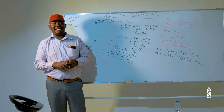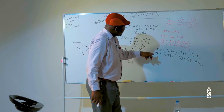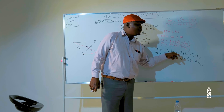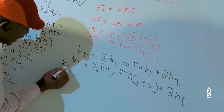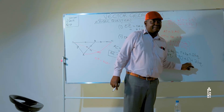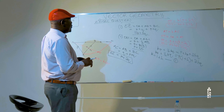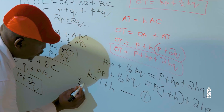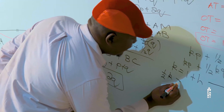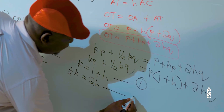Equating the scalar coefficients, for P: K equals 1 plus H — this is equation 1. For Q: half K equals 2H — this is equation 2. We have now created a pair of simultaneous linear equations.